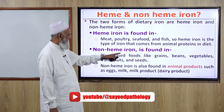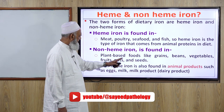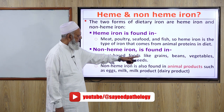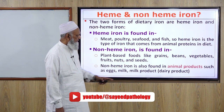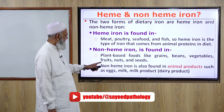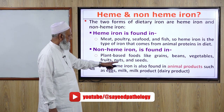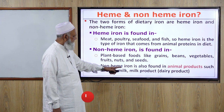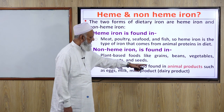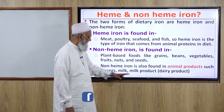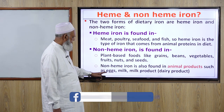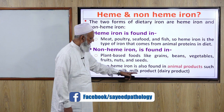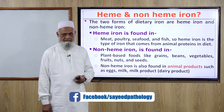Non-heme iron is found in plant-based foods like grains, beans, vegetables, fruits, nuts and seeds. Non-heme iron is also found in animal products such as eggs, milk, and milk products.